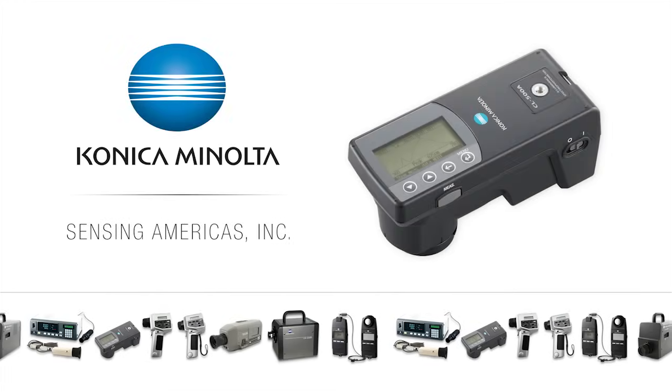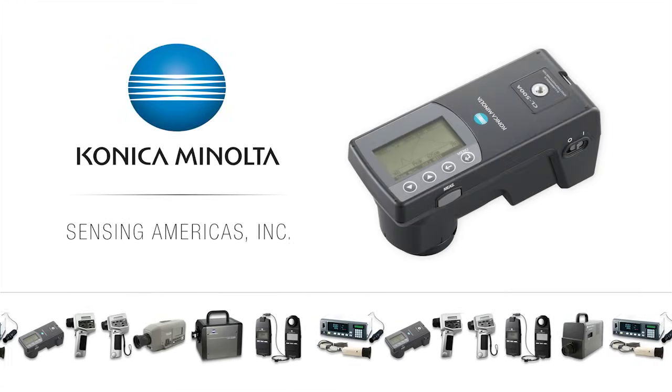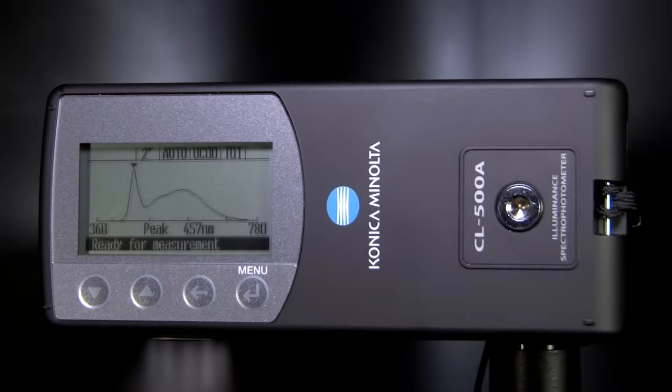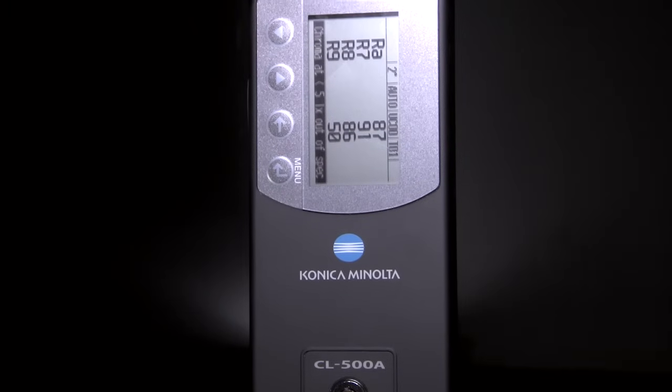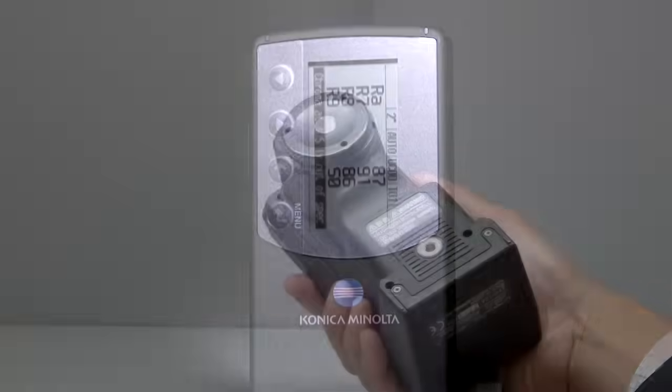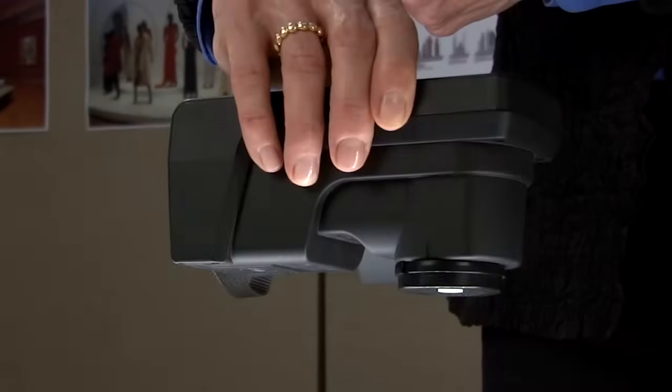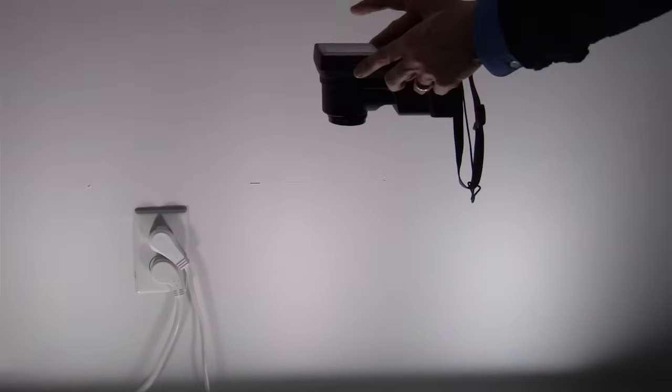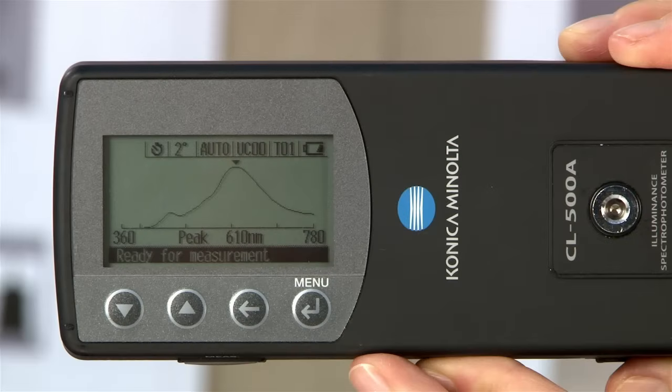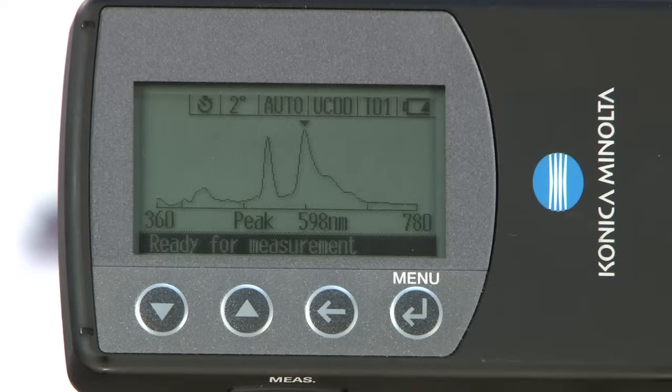The new CL500A illuminance spectrophotometer joins Konica Minolta Sensing's full line of high-quality illuminance meters. This instrument is easy to use and offers complete turnkey solutions for the lighting industry. The CL500A is the first illuminance spectrophotometer that conforms to both DIN and JIS standards and is traceable to NIST.